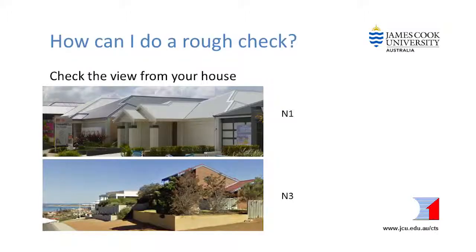How can I do a rough check? The view from your house gives a rough check on the wind classification. If you don't have a view, then it is likely your house is on fairly flat land surrounded by other houses and is N1 or C1 as appropriate. If you have a good view from the site, the wind classification will probably be N2 or C2 or higher depending on how far you can see.